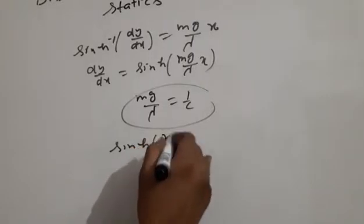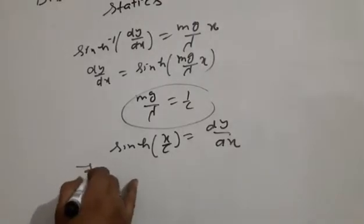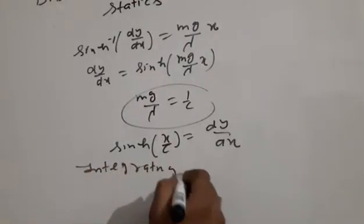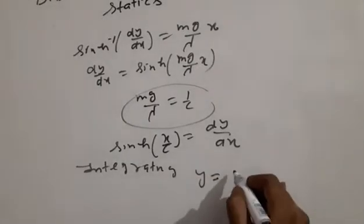After integrating, integrating, we get y equal to c cosh hyperbolic x upon c plus c2.